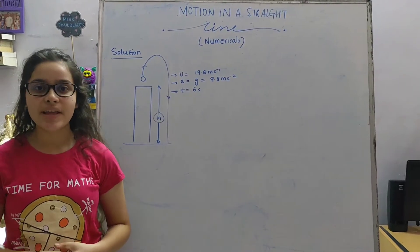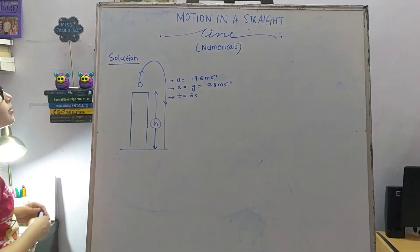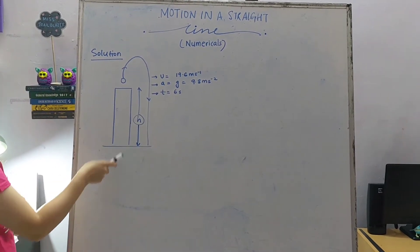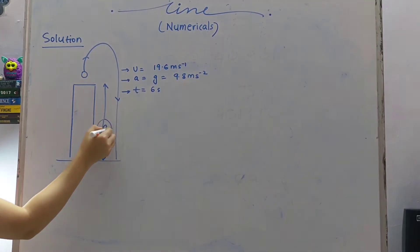Hope you all have read the question properly. Now let us try to put the question into a diagram. So look at it carefully. As the question says, from a tower of an unknown height, consider that unknown height to be some h.